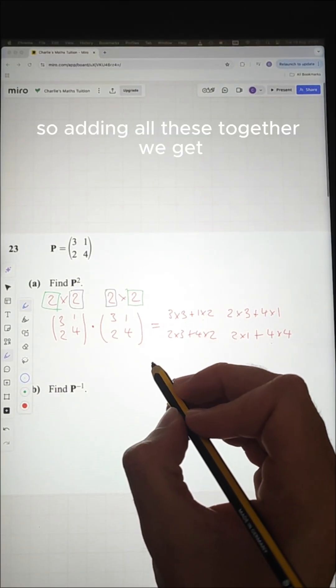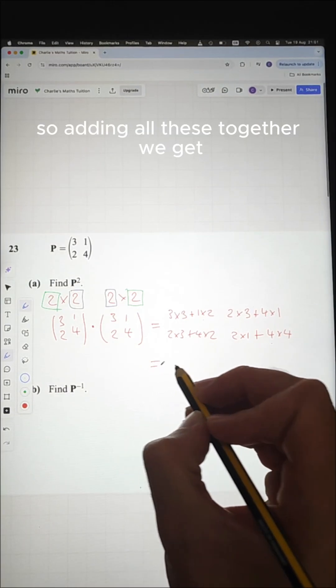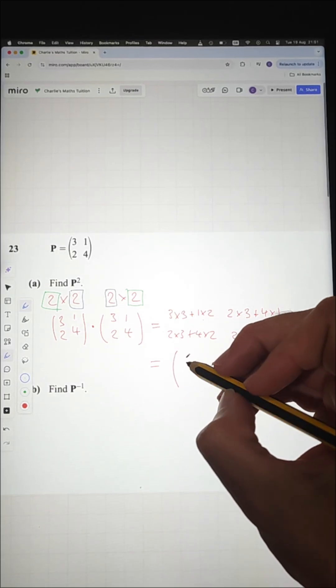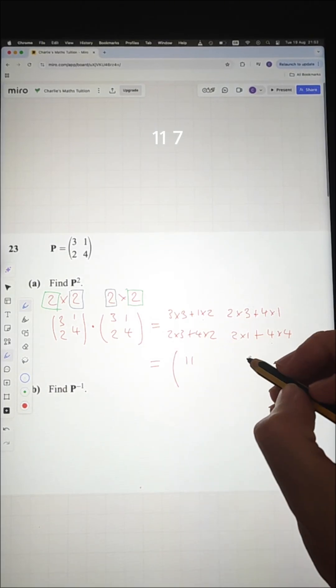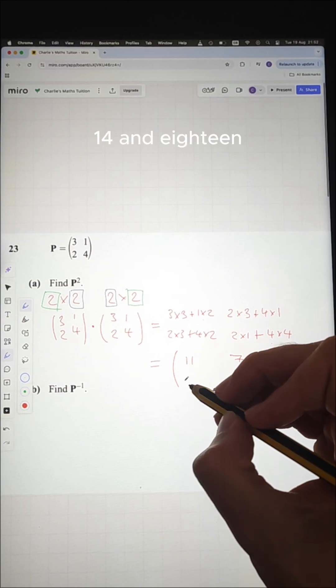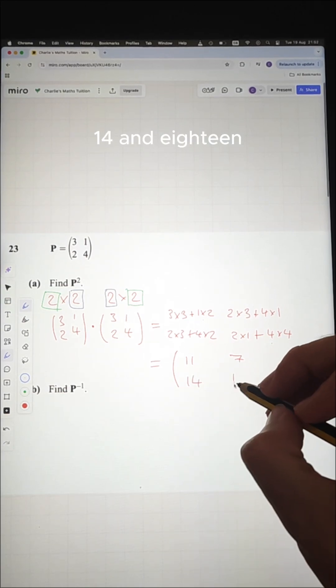So adding all these together, we get 11, 7, 14 and 18.